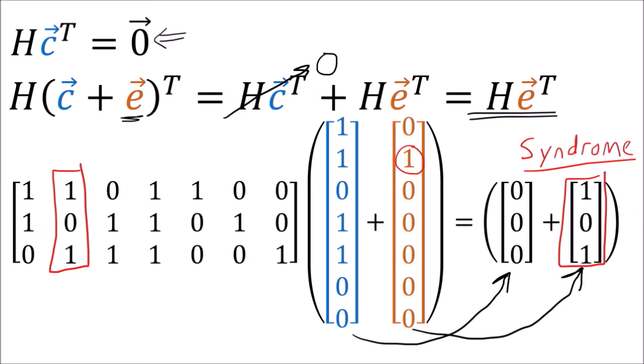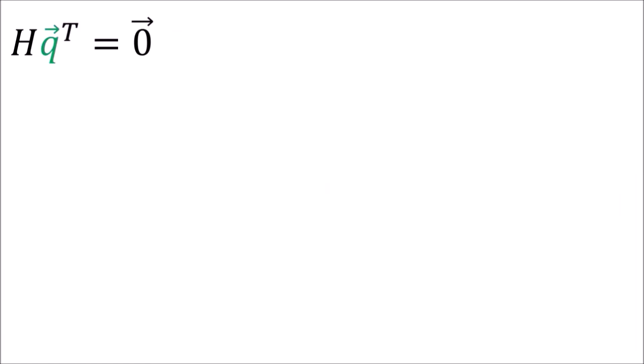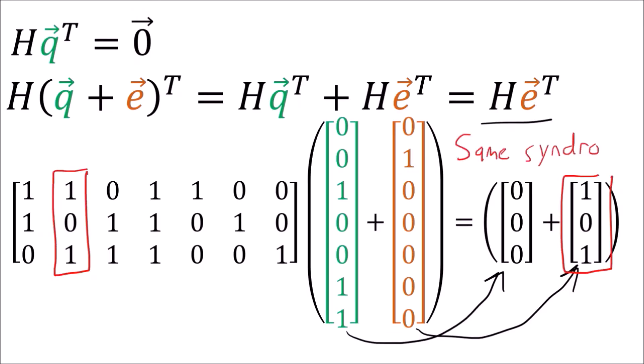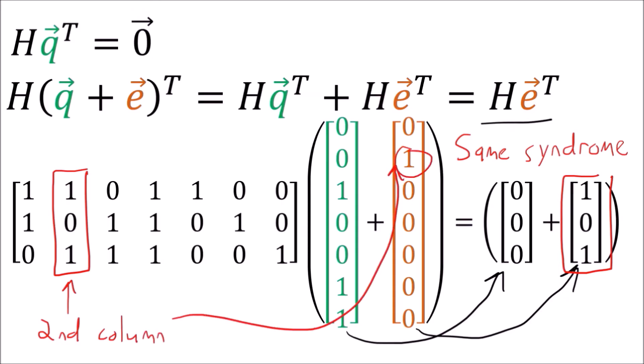The nice thing about the parity check matrix is that the syndrome only depends on the error. If we take another valid codeword Q and apply the same error to it, the codeword term will again go to 0, and the error vector again projects out the second column of the parity check matrix to give us the same syndrome vector as before. So the syndrome depends only on the error, which basically tells us what we need to fix. Because the syndrome vector matches the second column of the parity check matrix, we know that the error was in the second bit.